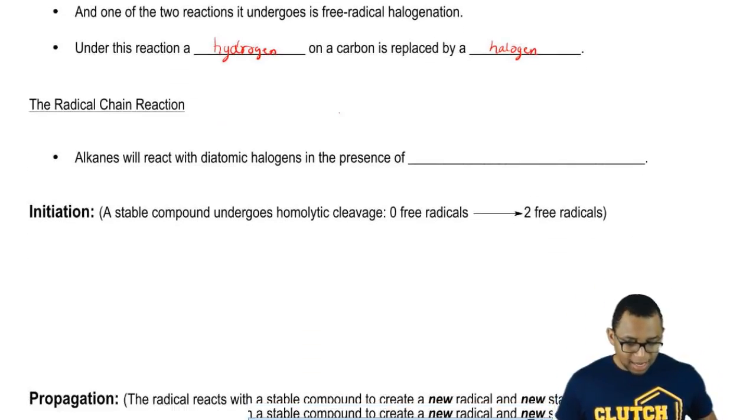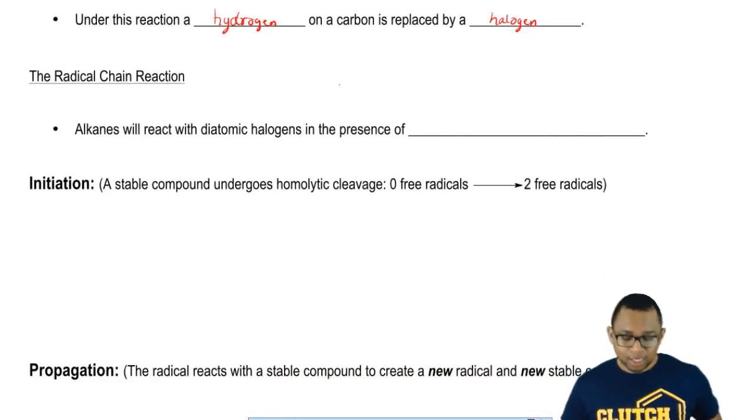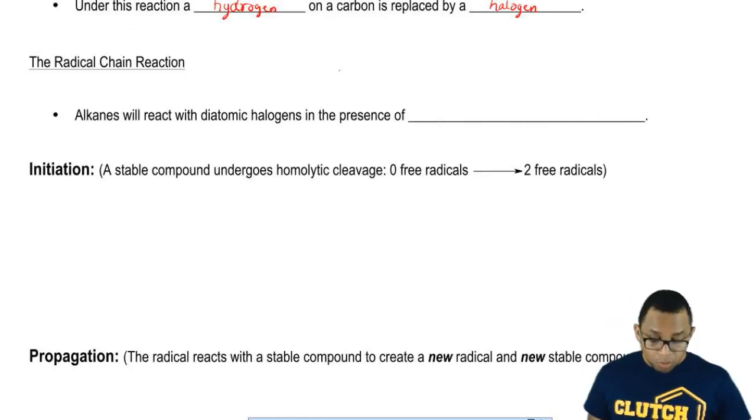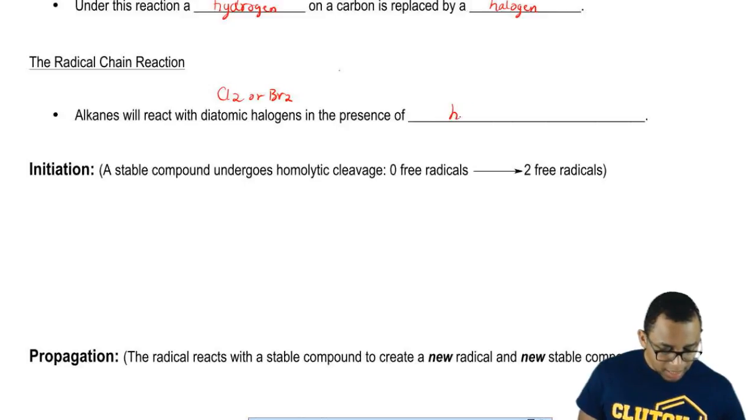We're going to say here that in this radical chain reaction, alkanes will react with diatomic halogen, so Cl2 or Br2 in the presence of heat or UV light.